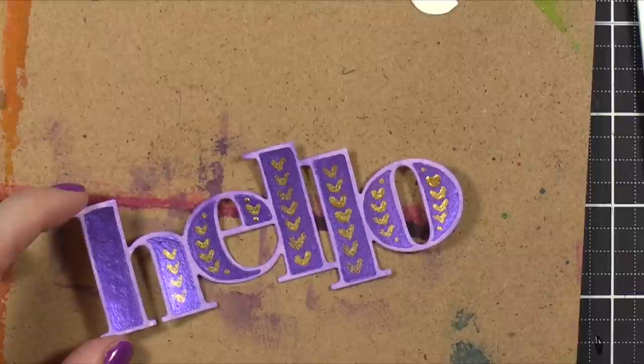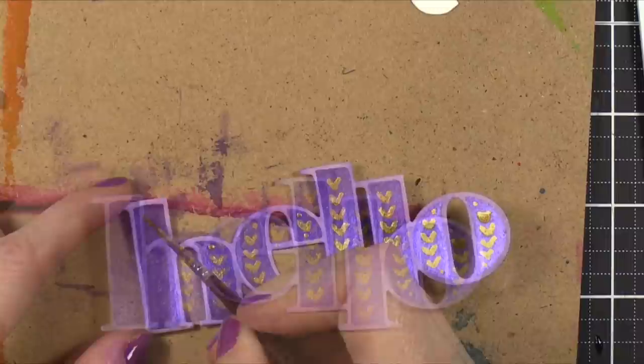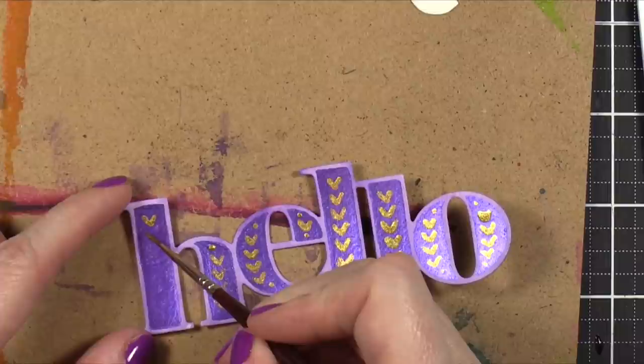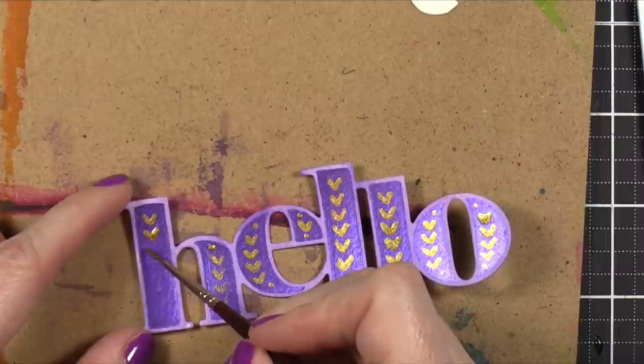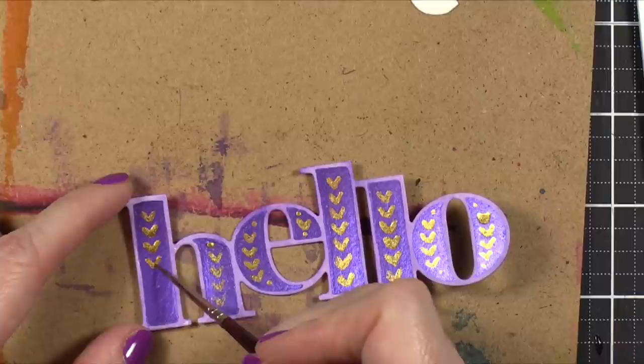So after I had that painted and dried, then I came back with my gold color once again. I'm just going to add a little dot up in that top corner. And then I'm going to start painting those V shapes. And this time I'm slowing down and spreading those out and I have a better idea of how it should look because I've already painted the rest of the word.